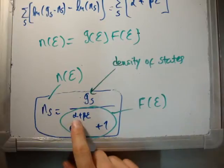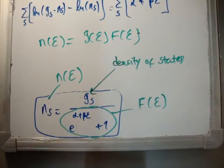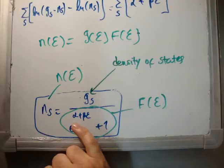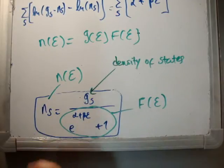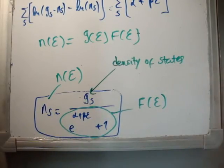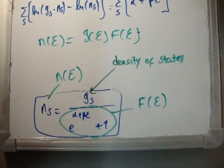We know that alpha for fermions involves the chemical potential, and beta equals one over kT as shown in a previous video. That's all I have to say about that — thanks for watching, please pass it on to your friends, subscribe to my channel, and have a look at universityphysicstutorials.com.